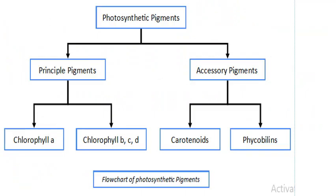Photosynthetic pigments include principal pigments and accessory pigments. Principal pigments are of two types: chlorophyll A, and chlorophyll B, C, and D. Accessory pigments are of two types: carotenoids and phycobilins. This is the flow chart of photosynthetic pigments.